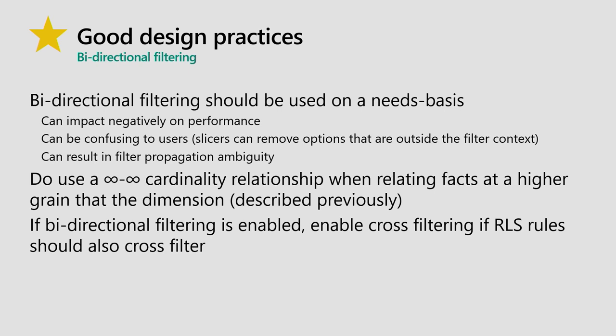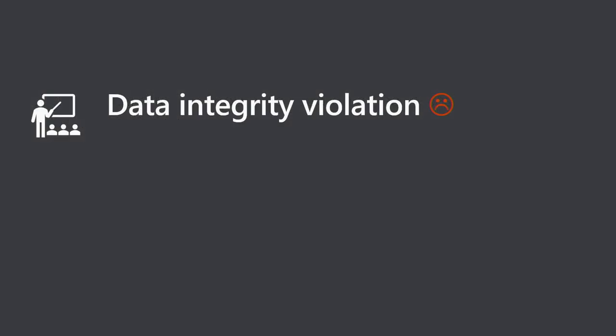Bidirectional filtering: please don't use it just to make slicers reflect where measure values exist—it's a popular but expensive approach. If you're enforcing row-level security, you must explicitly enable the option to propagate bidirectional filtering during row-level security enforcement; it's off by default. Test your row-level security rigorously—if it doesn't work as expected, you may have forgotten to turn on that option.